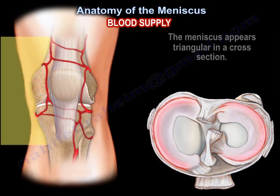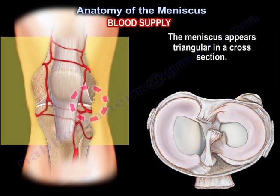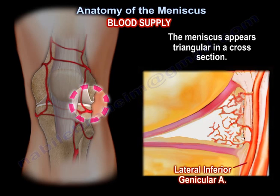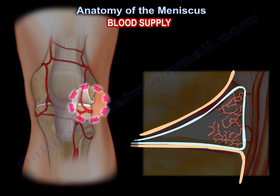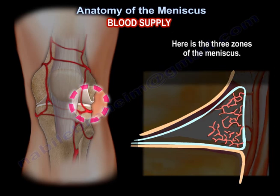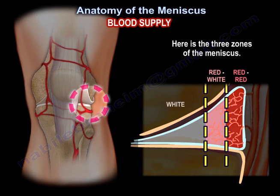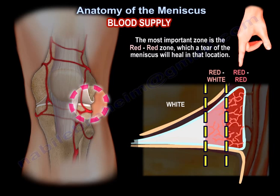The meniscus appears triangular in cross-section. There are three zones of the meniscus; the most important zone is the red-red zone, where a tear of the meniscus will heal.